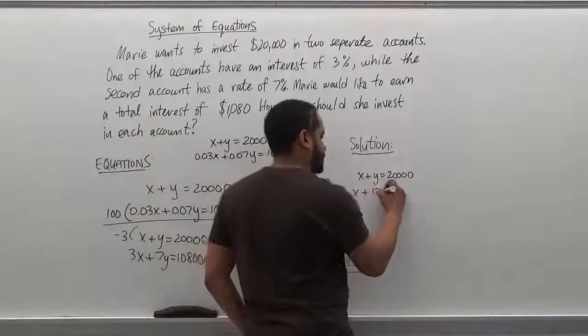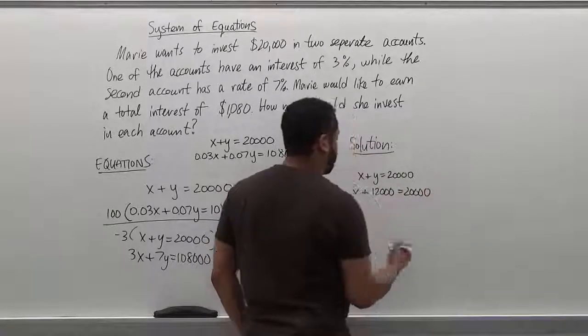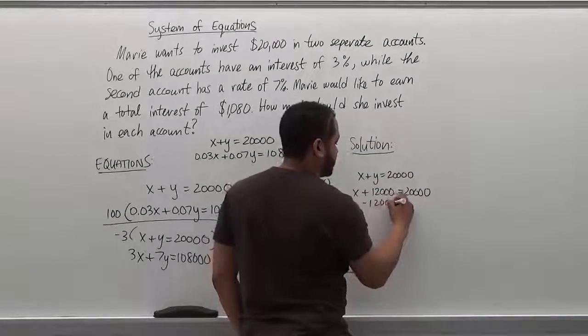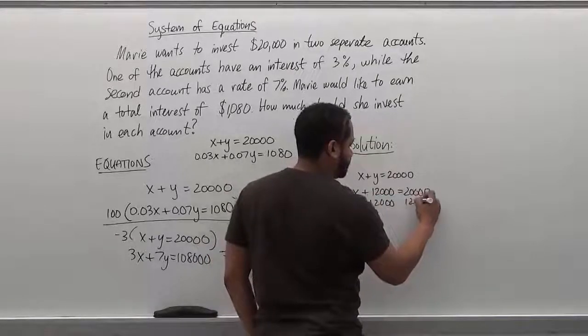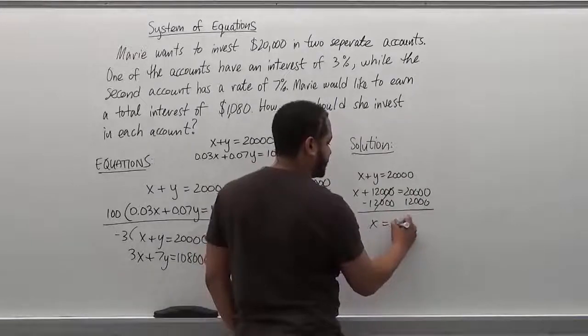To solve for x, we subtract 12,000 from 20,000. These cancel. We have x is equivalent to 8,000.